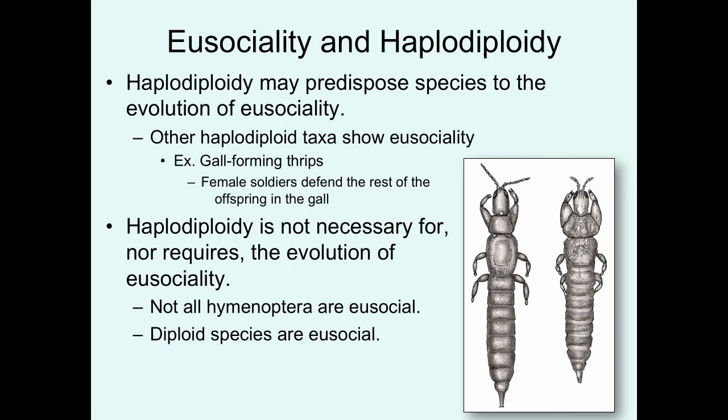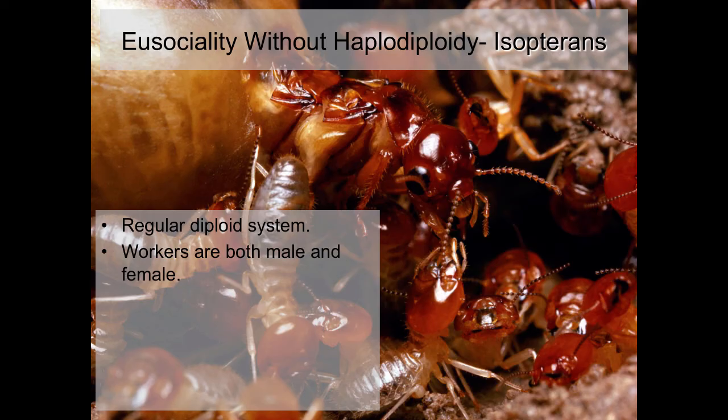However, haplodiploidy is neither necessary for nor does it guarantee the evolution of eusociality. Not all Hymenoptera are eusocial — there are solitary species. And there are also diploid species in other lineages that do show eusociality without haplodiploid genetics.